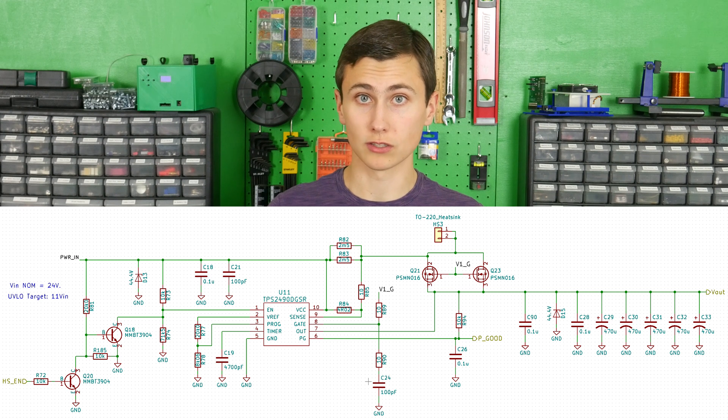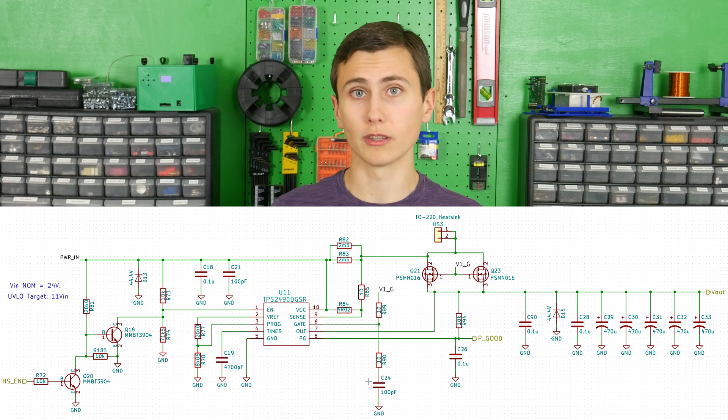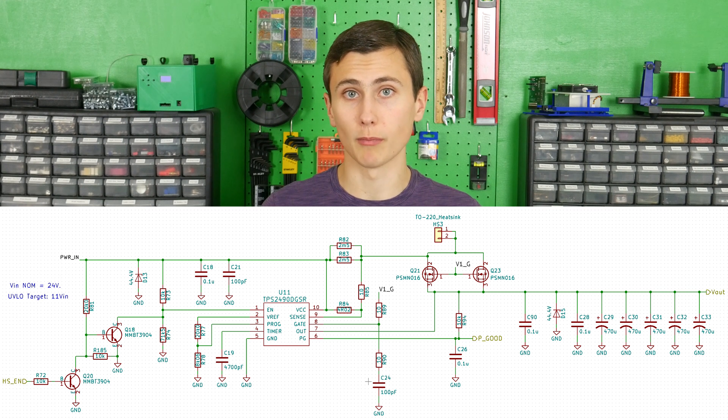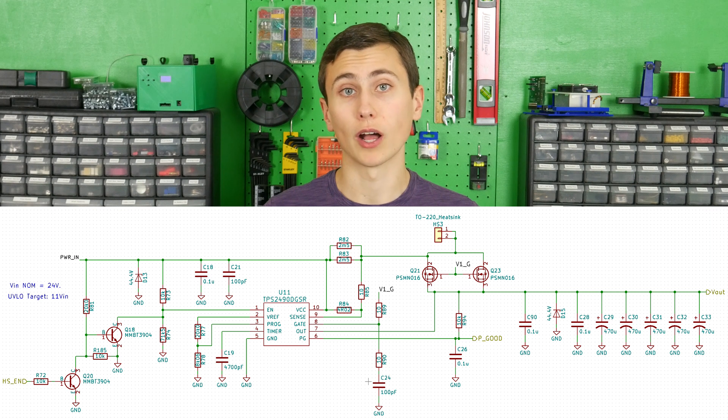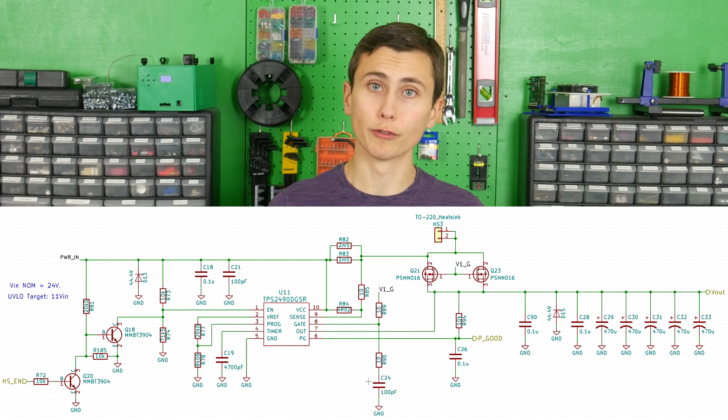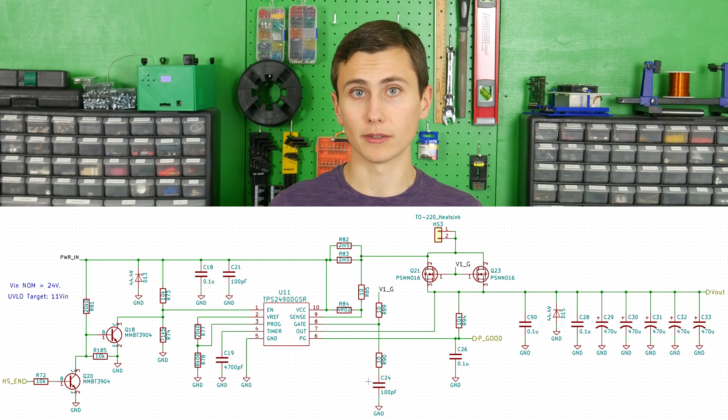This is possible because this controller is constantly monitoring the voltage across and current through the FET. There's a small collection of passives around that controller that provides this monitoring capability. Our hot swap controller also automatically cuts out when the input voltage gets too low, preventing over-discharge of our lead acid batteries.